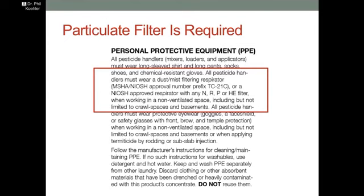A particular filter is required for this product label. It says all pesticide handlers must wear a dust/mist filtering respirator with an approved number in category N, R, T, or HE when working in a non-ventilated space, including but not limited to crawl spaces and basements. So basically, a particulate filter would be required for this particular product.